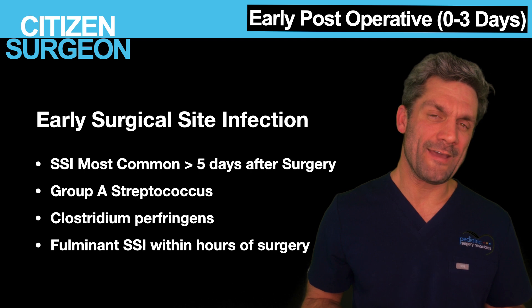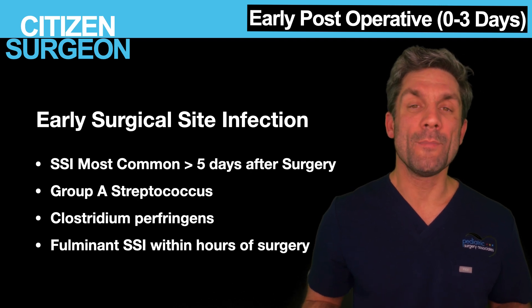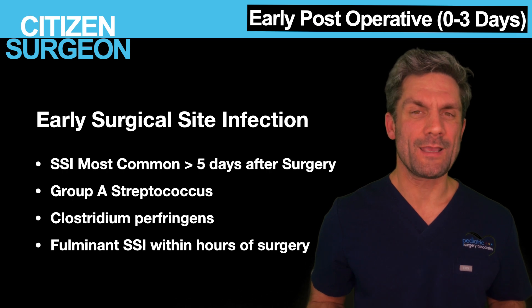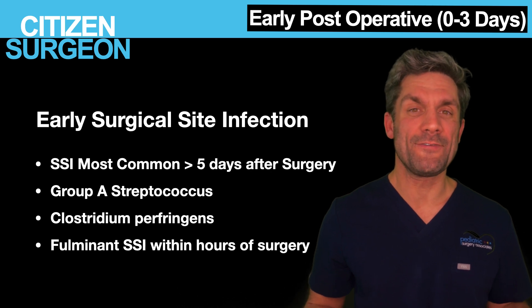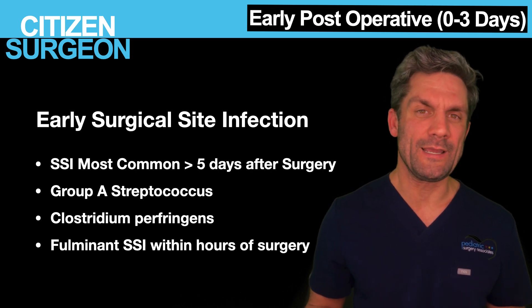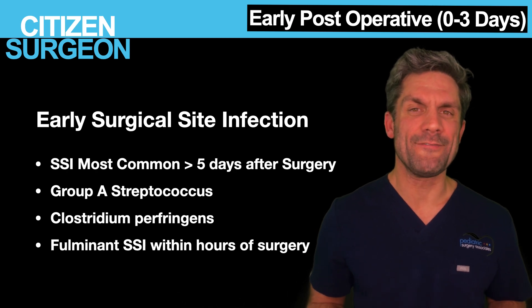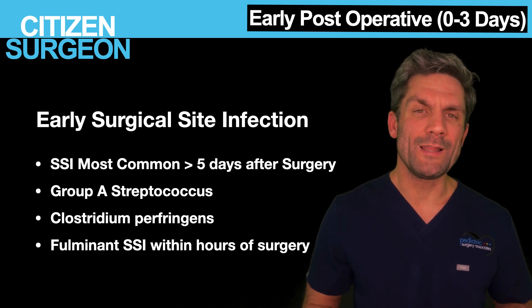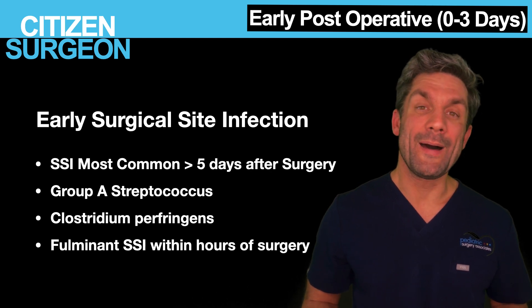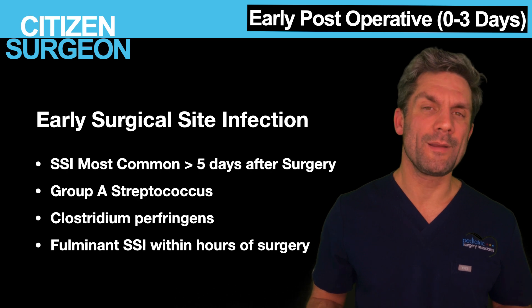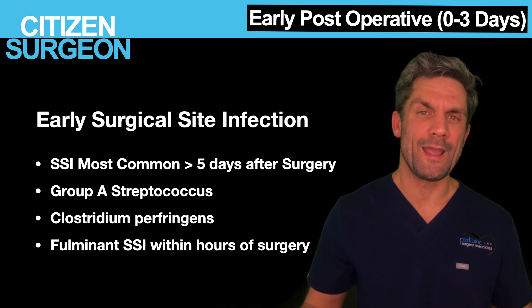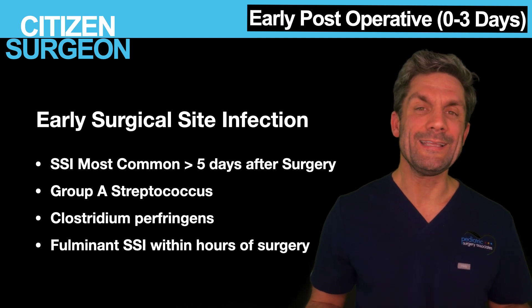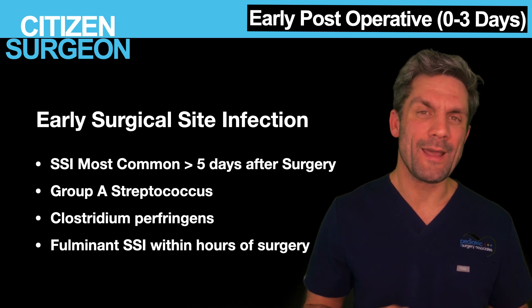In early surgical site infections, there are two bacteria that are most common: Streptococcus and Clostridium perfringens. These will lead to necrotizing fasciitis — a wildfire in surgery. If you're concerned about an early surgical site infection, you have redness, swelling, tissue that's turning gray or purple, crepitus, or bullae forming on the skin. It proceeds extremely rapidly, and needs immediate surgical debridement and antibiotic therapy.